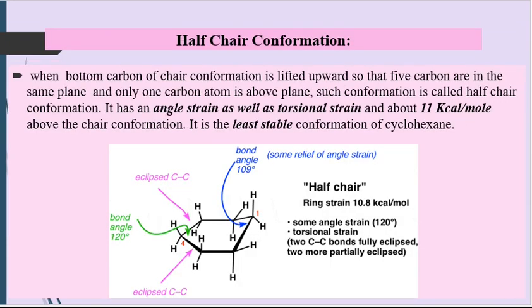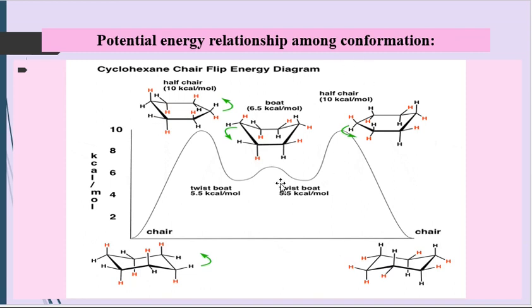The twist-boat conformation has energy of 5.5 kcal/mol, while boat conformation has 7.1 kcal/mol. Therefore, skew-boat or twist-boat conformation is more favorable than boat conformation because it has less energy. Twist-boat is more stable than boat but less stable than chair conformation, because chair conformation has 0 kcal/mol energy with no steric interaction. The next conformation is half-chair conformation. When the bottom carbon of chair conformation is lifted upward so that five of the six carbon atoms are in the same plane and only one is above, such conformation is called half-chair. It has angle strain as well as torsional strain, about 11 kcal/mol above the chair conformation, making it the least stable conformation of cyclohexane.